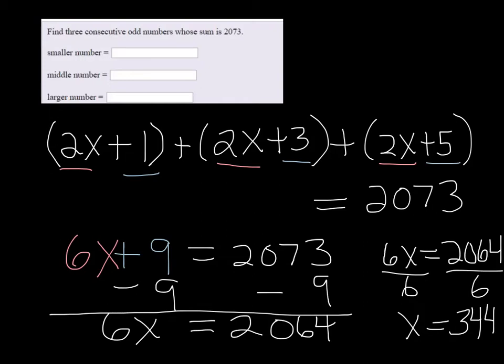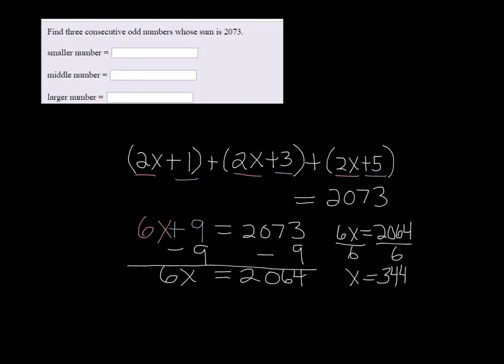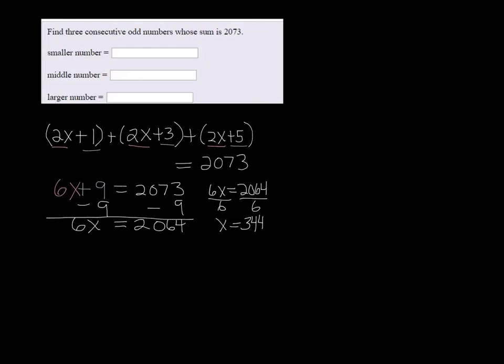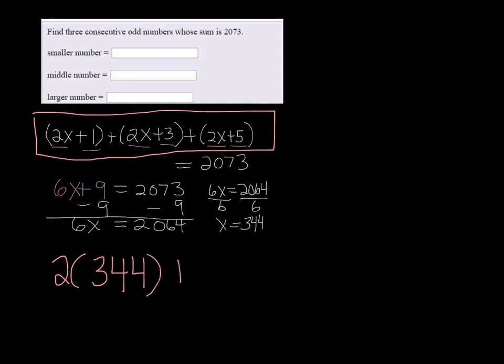Alright, we're not done yet. That's just the first part. We have to actually go back in to the three original numbers that we created up here that I'm boxing in pink. So the first odd number was 2x plus 1, so we have to plug 344 into that and then figure out what that is.